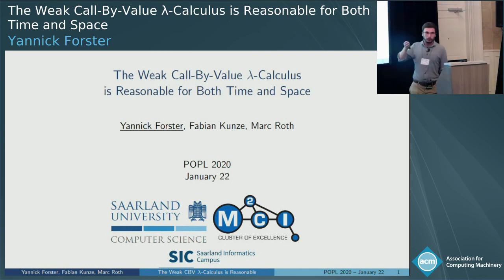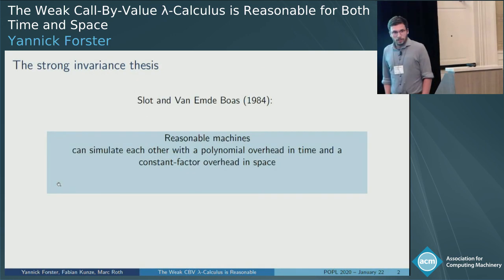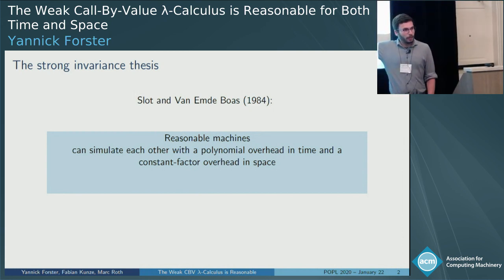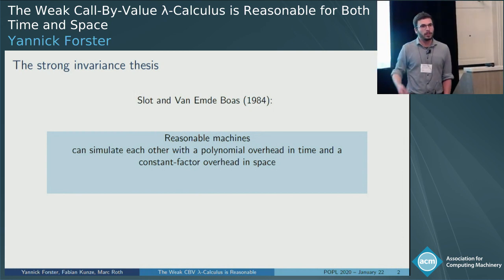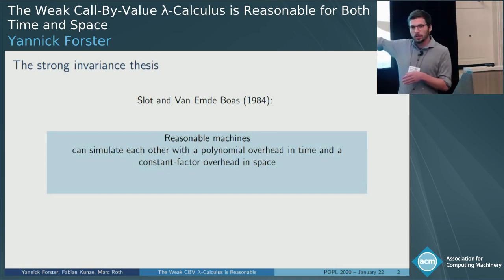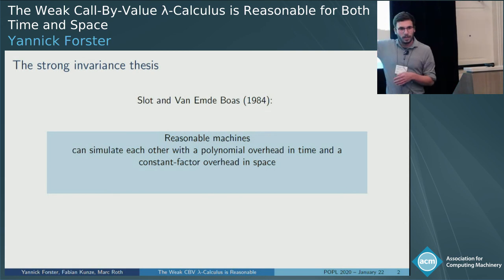We proved that it's reasonable for time and space. The definition of reasonable machines is from 1984 by Slot and Van Emde Boers. Their claim is that reasonable machines can simulate each other with a polynomial overhead in time and a constant factor overhead in space. This is widely used in teaching and applications, meaning your model of computation doesn't matter for complexity classes like P, NP, or PSPACE.